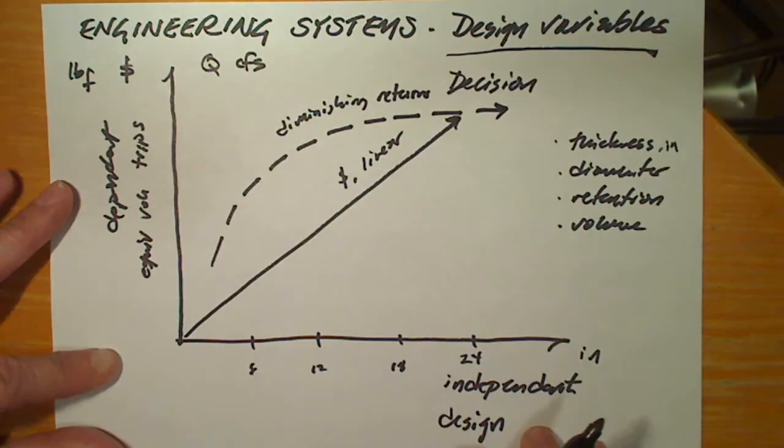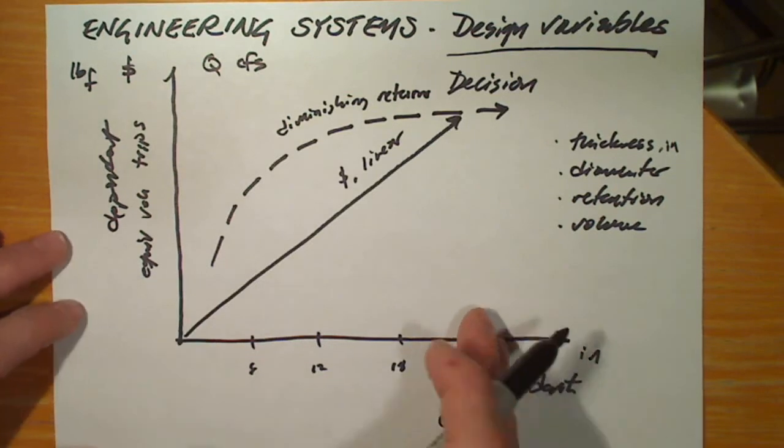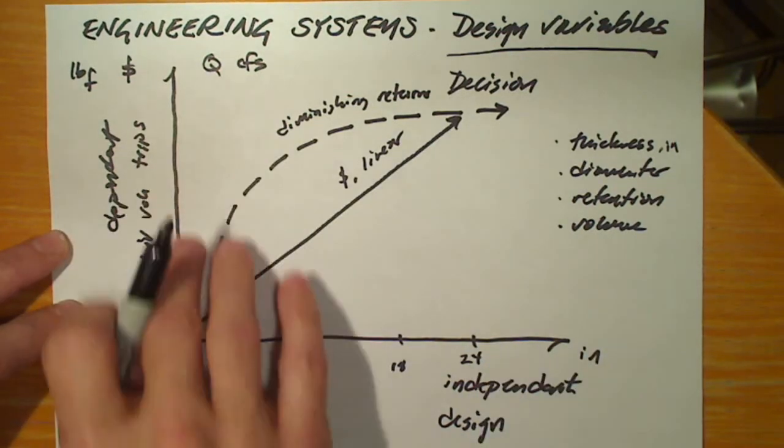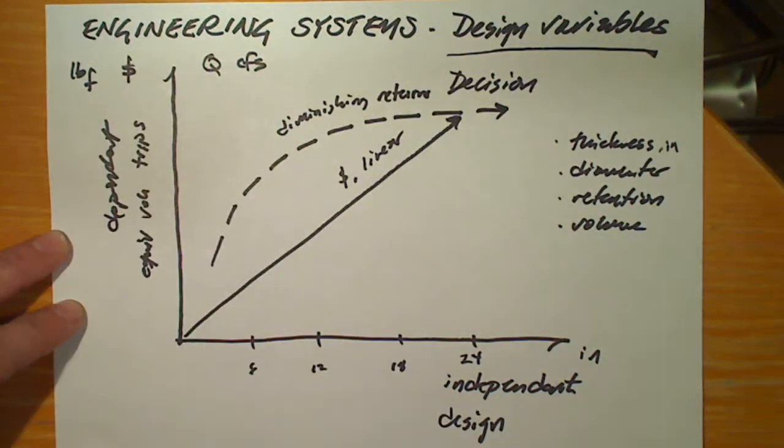Now we understand that there's a difference between the design variable over which we have discretion and these other variables, the dependent variables that we're designing for. We're also subject to constraints.